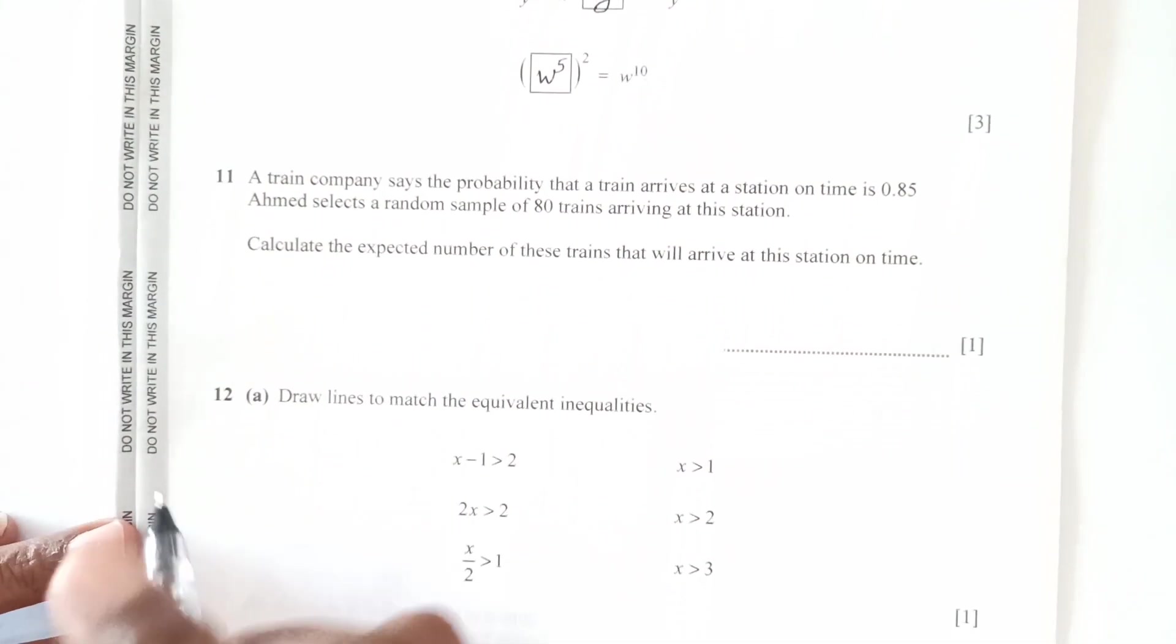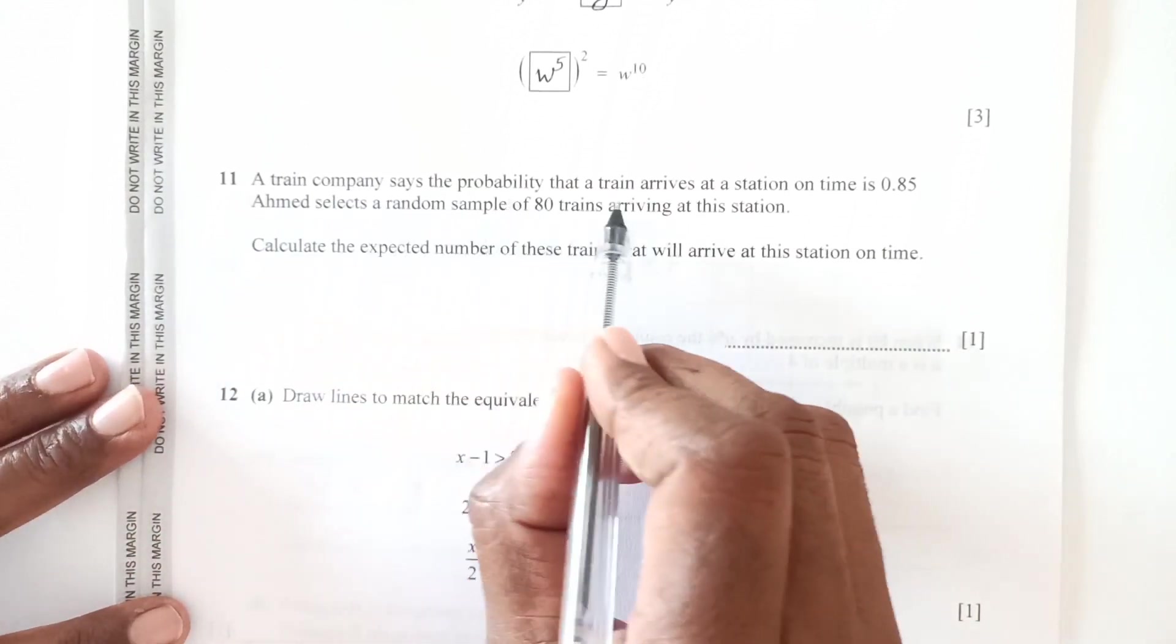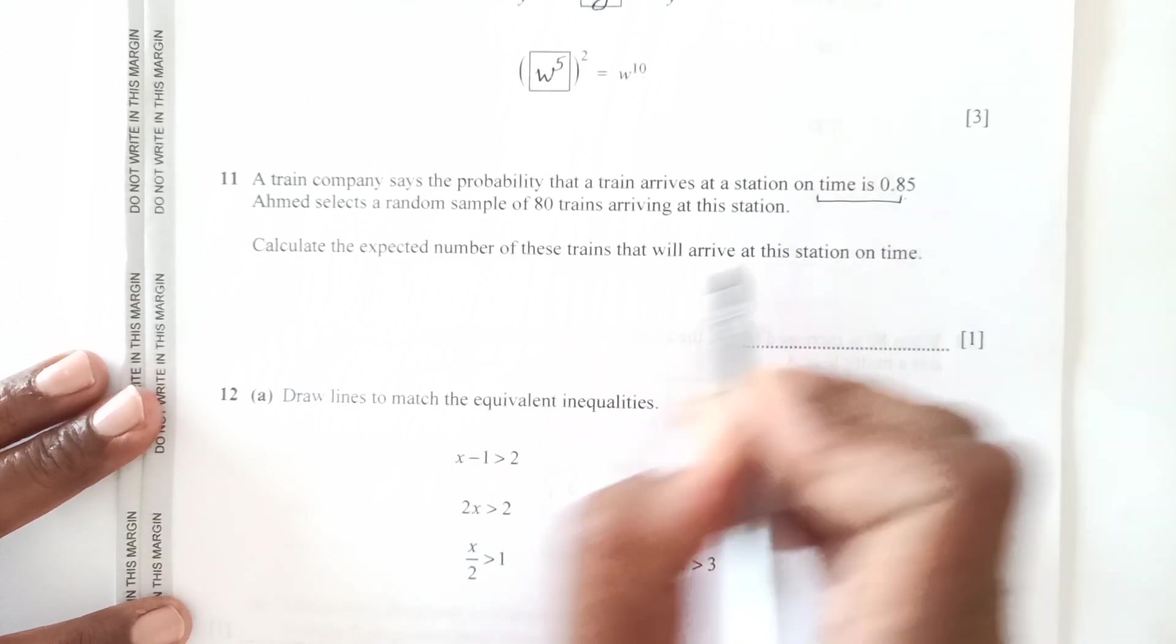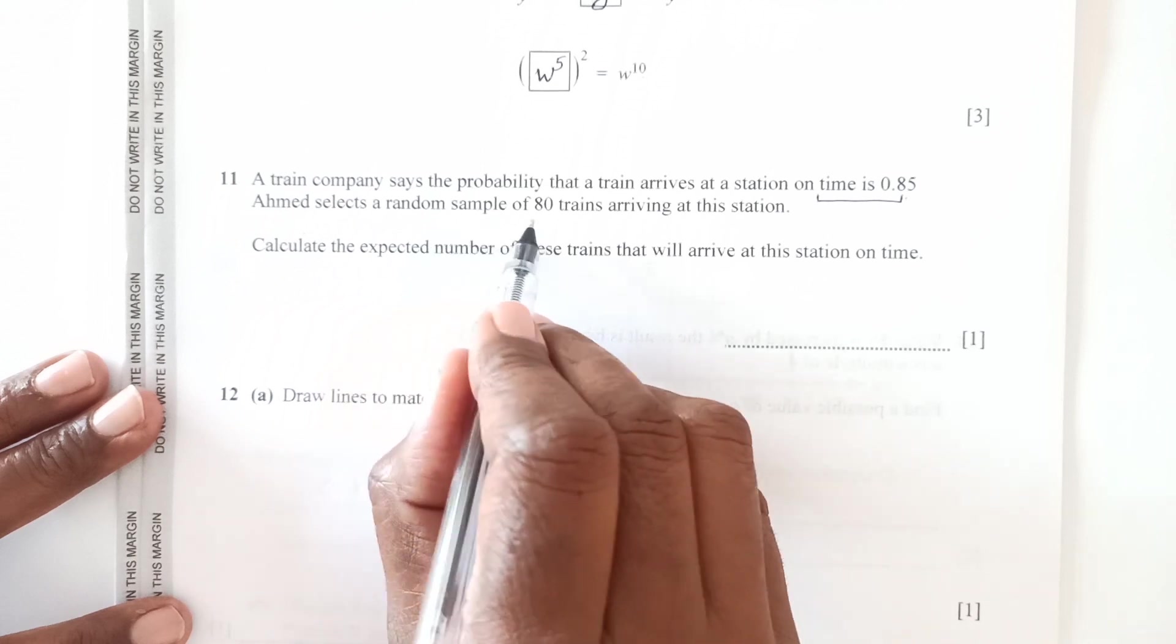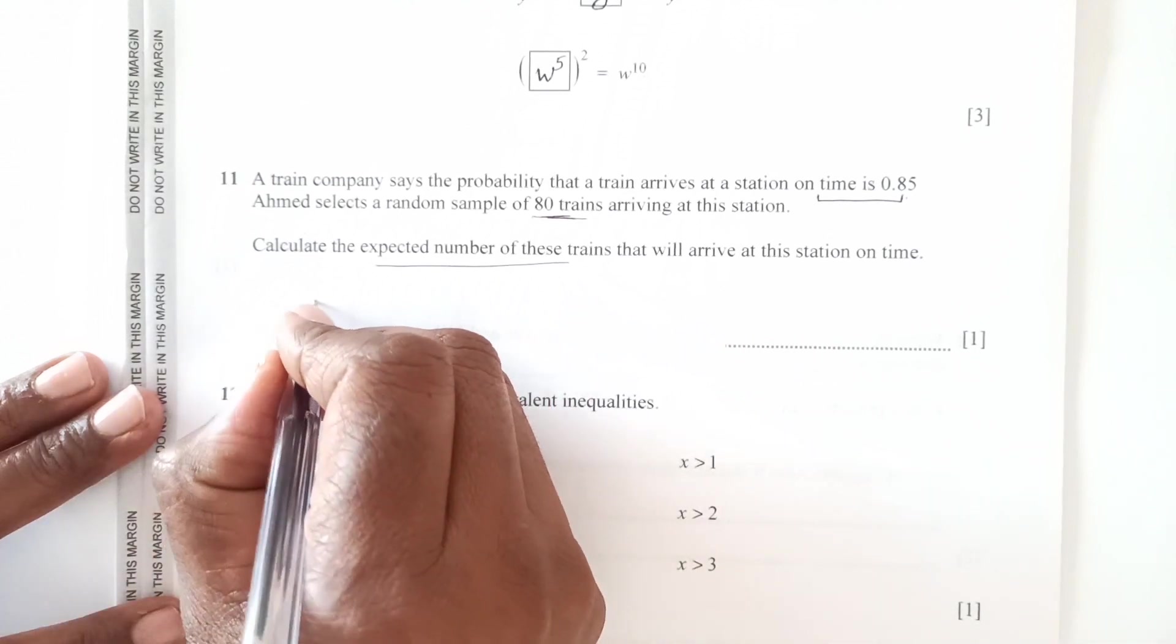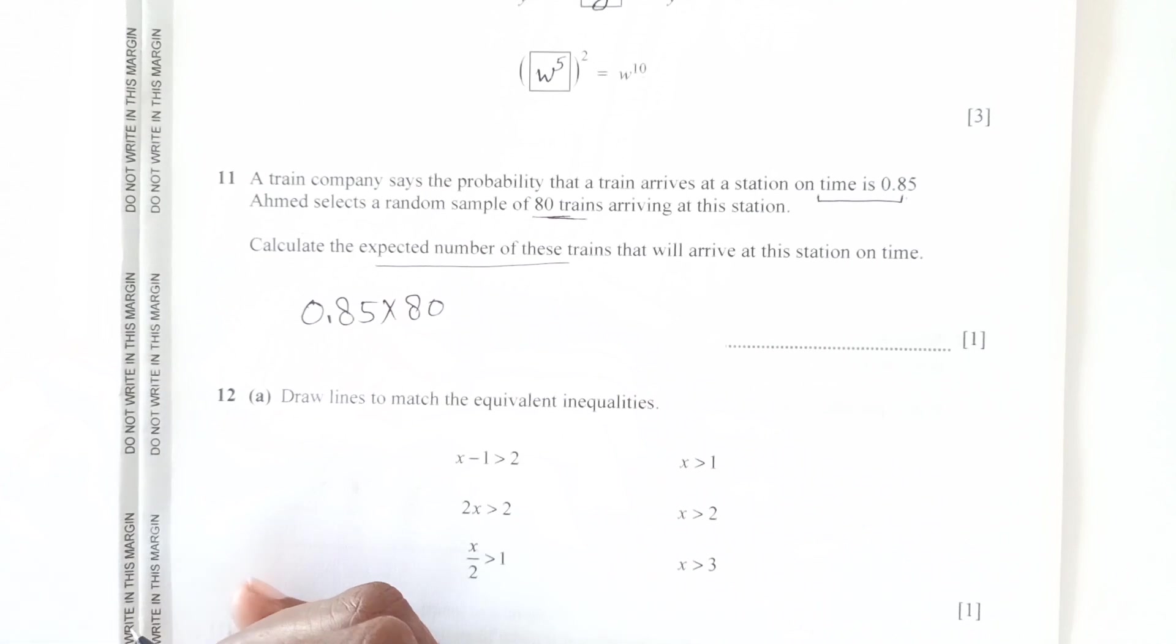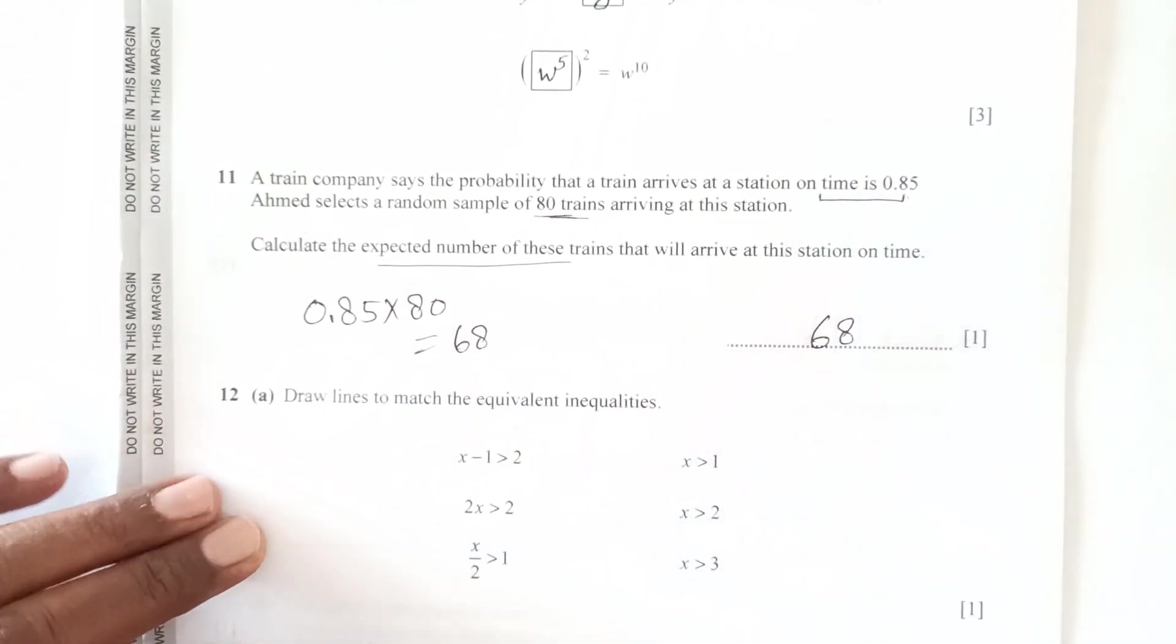Now number 11, a train company says the probability that train arrives at station on time is 0.85. Ahmed selects a random sample of 80 trains arriving at this station. Calculate the expected number of trains. So it is very simple, 0.85 times you are just going to multiply it. I have already multiplied so I am getting here 68.